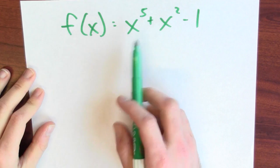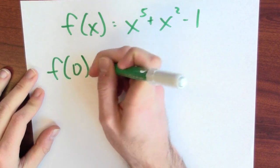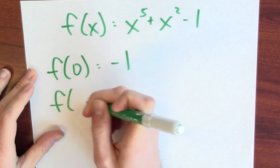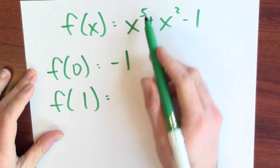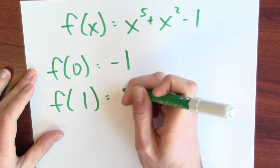What do I know about this function? It's continuous, and I know that f of 0, if I plug in 0, it's 0 plus 0 minus 1. So f of 0 is minus 1, and f of 1, that's 1 to the fifth plus 1 squared minus 1, that's 1 plus 1 minus 1, that's 1.